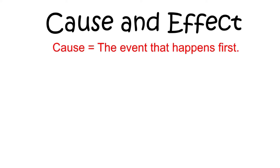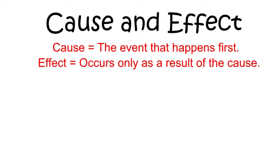A cause and effect relationship can be made easier to understand when you remember that the cause happens first. The effect will always occur second, and only as a result of the first event, the cause.